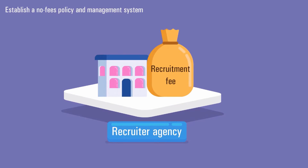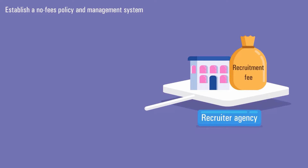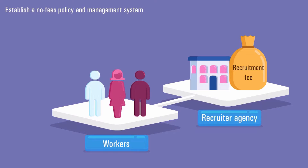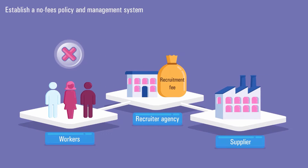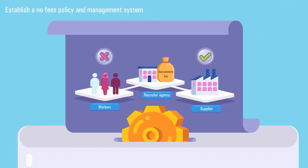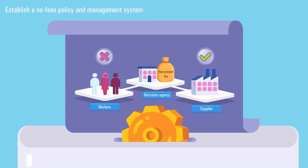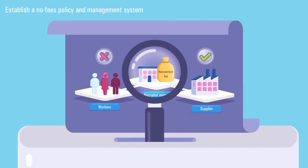The ultimate objective for any company should be that workers do not pay recruitment fees. Instead, the employer should pay recruitment agencies for their services directly. This is the only acceptable approach for recruiting workers. During audits, it's the only one that will not result in a priority non-conformance.